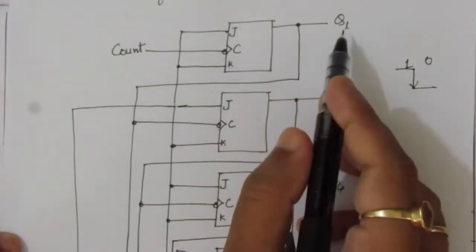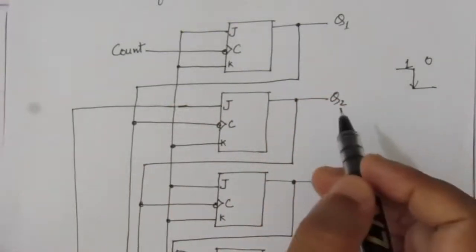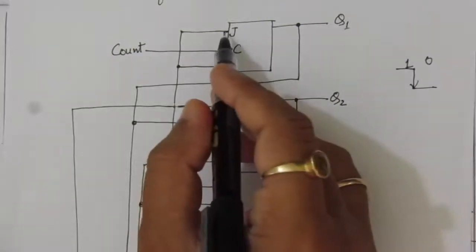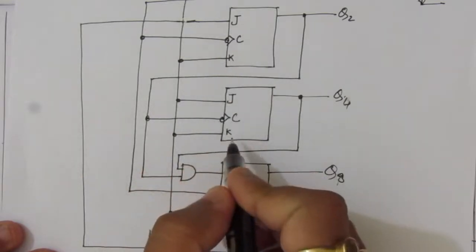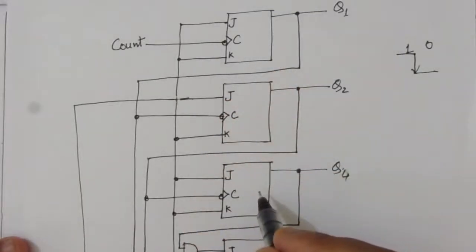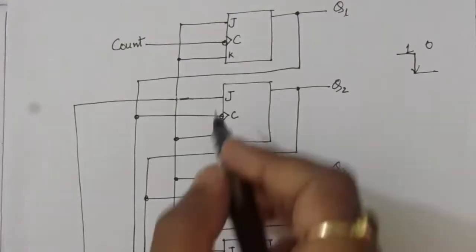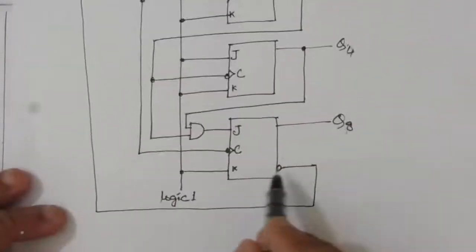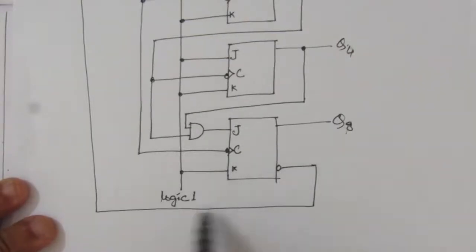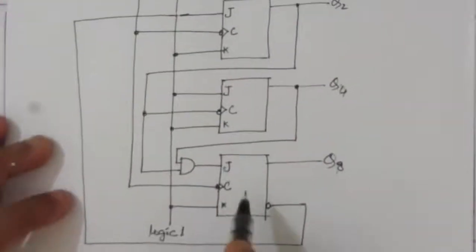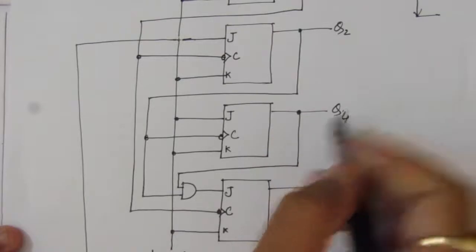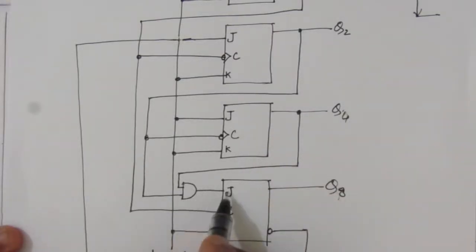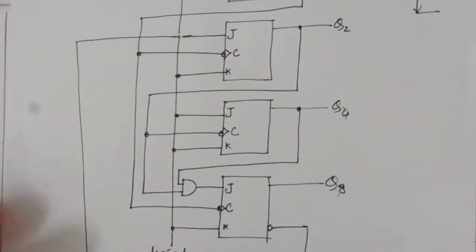The first and third flip-flops have their J and K inputs tied together and connected to logic one, making them work as toggle (T) flip-flops. The second flip-flop's J input is fed back from the complemented output of the fourth JK flip-flop. The fourth flip-flop's J input is the AND of Q2 and Q4, applied through an AND gate.